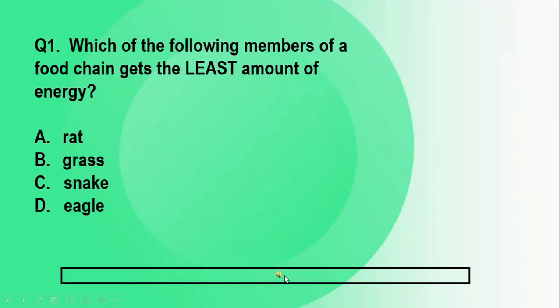For question number one, which of the following members of a food chain gets the least amount of energy? A. Rat. B. Grass. C. Snake. D. Eagle.